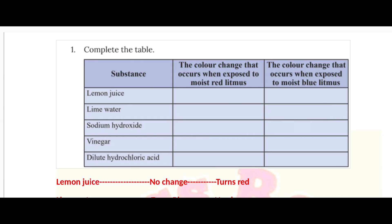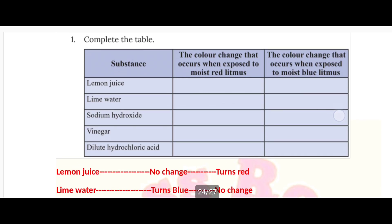First: lemon juice, lime water, sodium hydroxide, vinegar, dilute hydrochloric acid. These are the substances. What color change happens in red litmus paper and blue litmus paper?